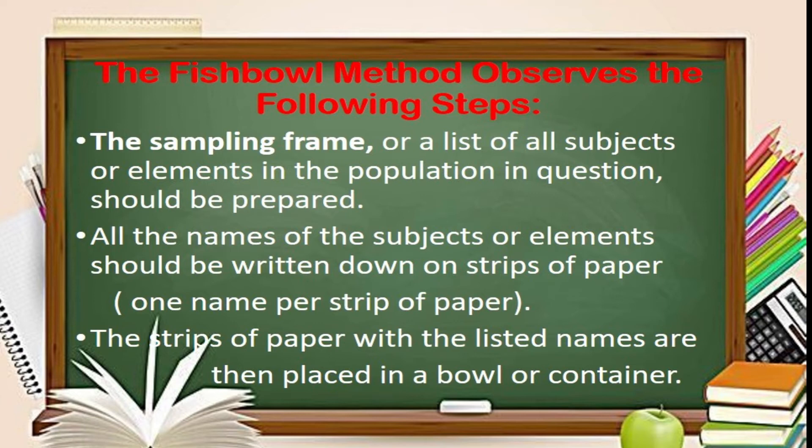The fishbowl method observes the following steps. First, the sampling frame — a list of all the subjects or elements in the population in question — should be prepared. Second, all the names of the subjects or elements should be written down on a strip of paper, one name per strip of paper. Third, the strips of paper with the listed names are then placed in a bowl or container.